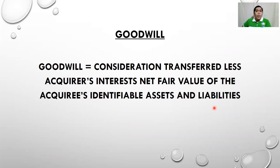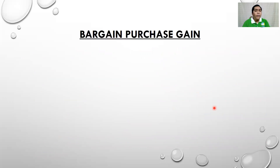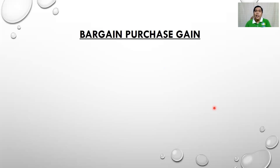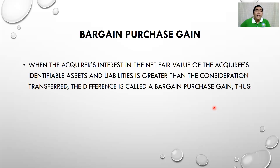The opposite of goodwill is a bargain purchase gain — it is like a negative goodwill. If the value of a company is 5 pesos but the consideration transferred is only 1 peso, that is a bargain purchase gain — a 4-peso gain. When the acquirer's interest in the net fair value of the acquiree's identifiable assets is greater than the consideration transferred, the difference is called a bargain purchase gain.